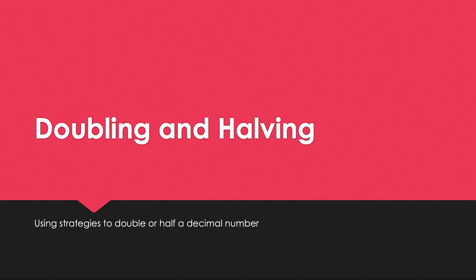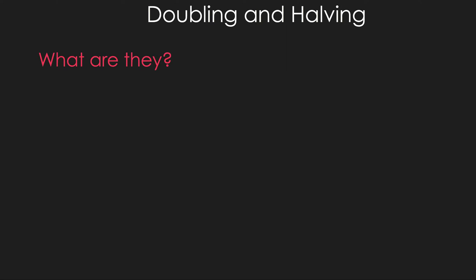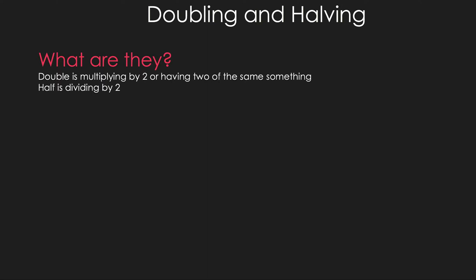Doubling and halving — using strategies to double or halve a decimal number. Double means multiplying by two, or having two of the same something. Half means dividing by two. We learn these methods to discover different ways to attack a problem.